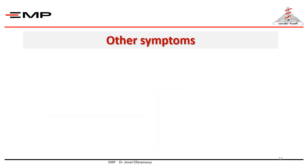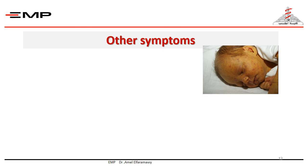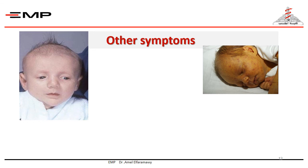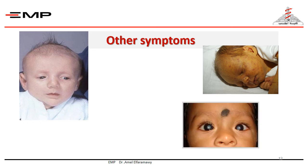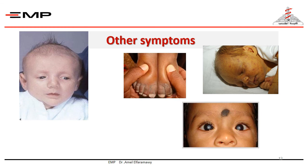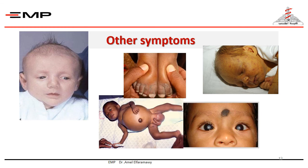Other symptoms may be found according to the specific underlying cause. For example, petechial rashes may occur in intrauterine infection; special facies and congenital heart disease in Alagille syndrome; and convulsions, mental retardation, microcephaly, cataract, and galactosemia in metabolic disease. Eventually, long-standing unresolved cholestasis will end up with liver cirrhosis, portal hypertension, varices, ascites, and edema of the lower limbs.